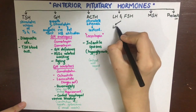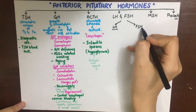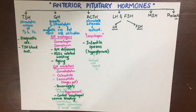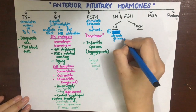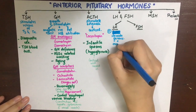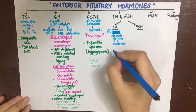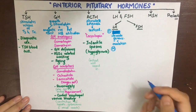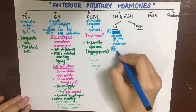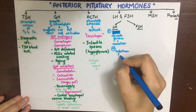Next we have LH and FSH, which we will discuss separately. Luteinizing hormone in females causes ovarian steroidogenesis and ovulation, while in males it causes testosterone production by the Leydig cells.